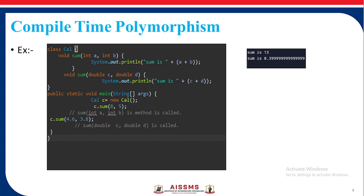Here is an example of compile-time polymorphism. A class `cal` is written which has a method `sum` with parameters int a and int b. Also, another method with the same name `sum` has different parameters: double c and double d. When we create the object of the class and call method `sum` with integer parameters, that method is called. When we pass double parameters, the method with double parameters is called. So we get the result as 13.1 and the second result as 8.399.